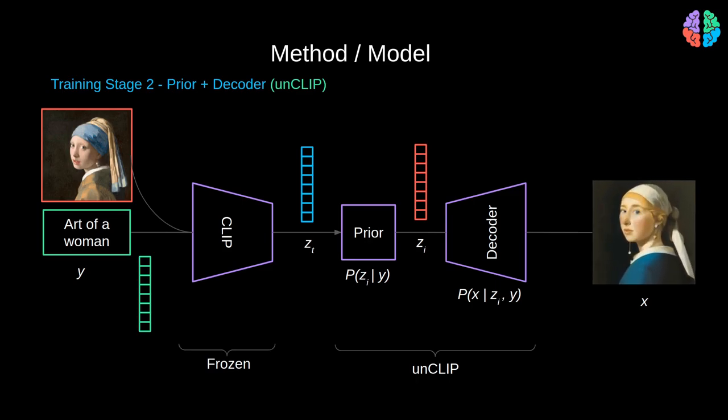The decoder network optionally takes the captions directly as input instead of taking in just the image embeddings. Now that we know the main components of unCLIP, the prior and the decoder network, let's look at the decoder architecture first and then look at the architecture of the prior.